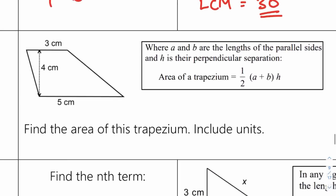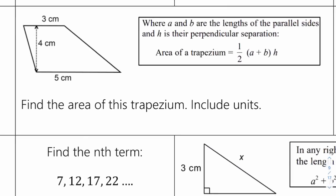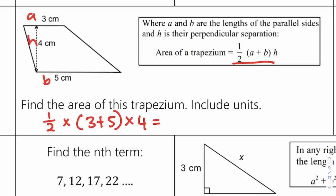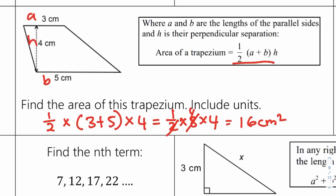Find the area of this trapezium including units. Where a and b are the lengths of the parallel sides, and h is the perpendicular separation. The area of a trapezium is half times (a plus b) times h. So half times (3 plus 5) times 4 — that's half times 8 times 4 — which gives 16 centimetres squared.